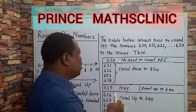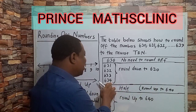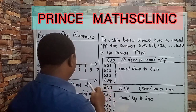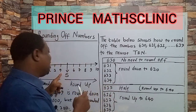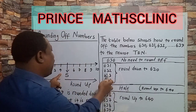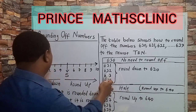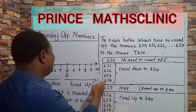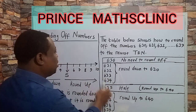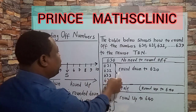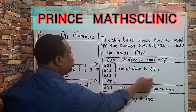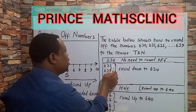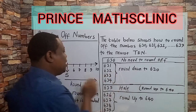Why? Because if you look at these numbers, just like we have in our number line, 4 is closer to 0 than it is to 1. Therefore, these numbers all become 630.